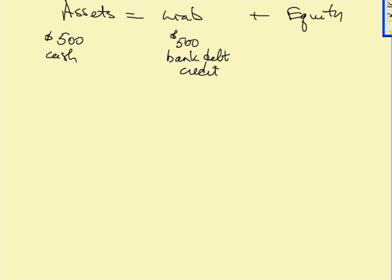So the recording of the bank debt because that's the source of the value would be a credit. And where the value wound up, which was in an asset called cash in the bank, would be our debit. And so when we record a transaction in accounting, what we're doing is recording a credit, the source, and the destination, a debit.